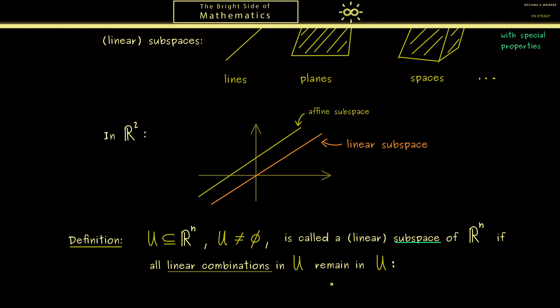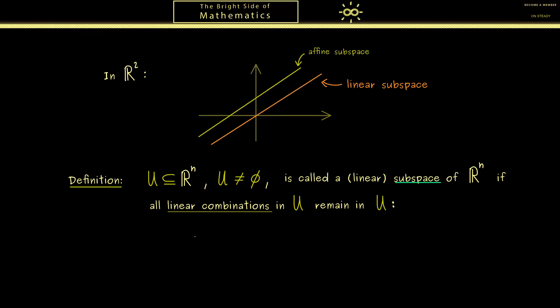And of course we can also put this into a formula. For this please recall part 3 where we have defined a linear combination. So we just take k vectors u⁽¹⁾, u⁽²⁾, and so on from the set U and also k scalars. And then we can form the linear combination which means we scale the vector uⱼ with λⱼ and then we sum all up.